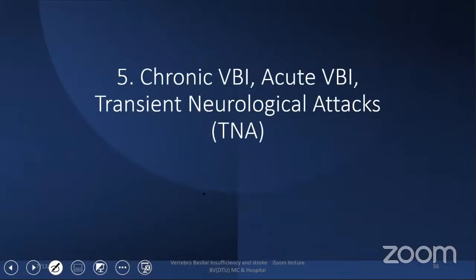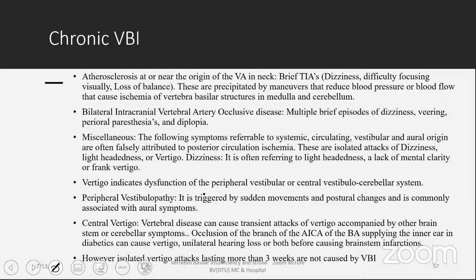Chronic vertebrobasilar insufficiency, acute vertebrobasilar insufficiency, and transient neurological attacks (TNAs): atherosclerosis at the vertebral artery origin in the neck causes brief TIAs of dizziness, difficulty focusing visually, and loss of balance, precipitated by manoeuvres that reduce blood pressure or blood flow, causing ischemia of the vertebrobasilar structures in the medulla and cerebellum. Bilateral intracranial vertebral artery occlusion causes multiple brief episodes of dizziness, veering, perioral paresthesias, and diplopia. Some symptoms — isolated attacks of dizziness, lightheadedness, or vertigo — are often falsely attributed to posterior circulation ischemia but may be of systemic, circulatory, vestibular, or oral origin.